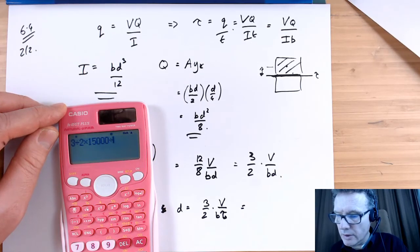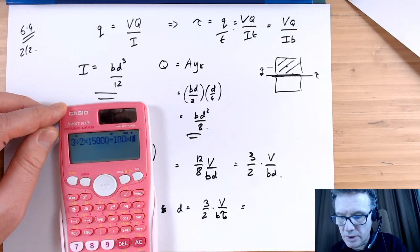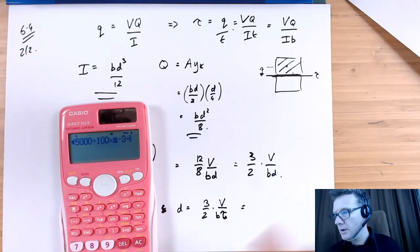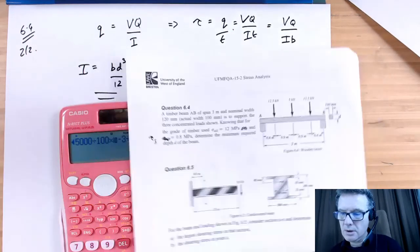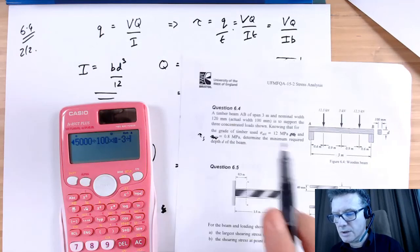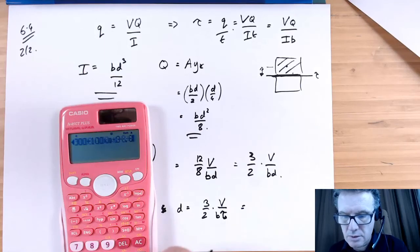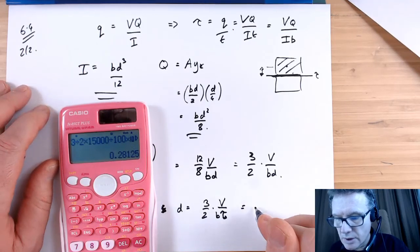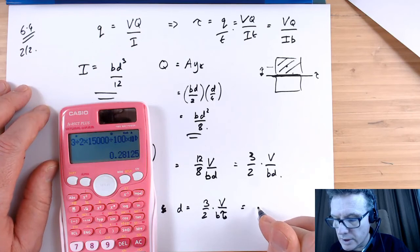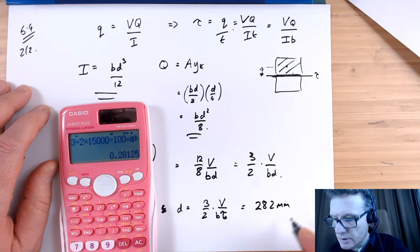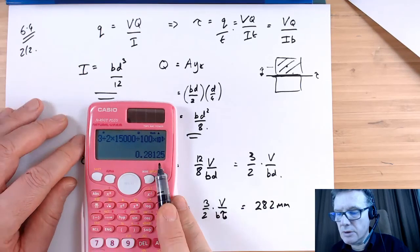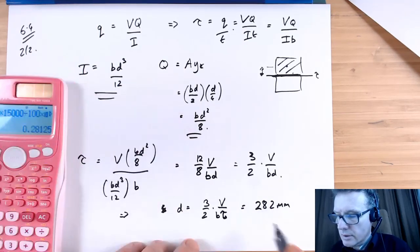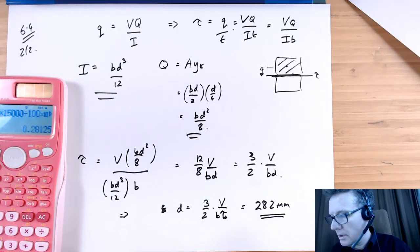Divided by the shear stress, which is 0.8 megapascals. That gives me 281.25 millimeters. Round up your answer, don't round it down - 282 millimeters. If you round down to 281, that could be critical and make your beam unsafe. So go a bit above it.